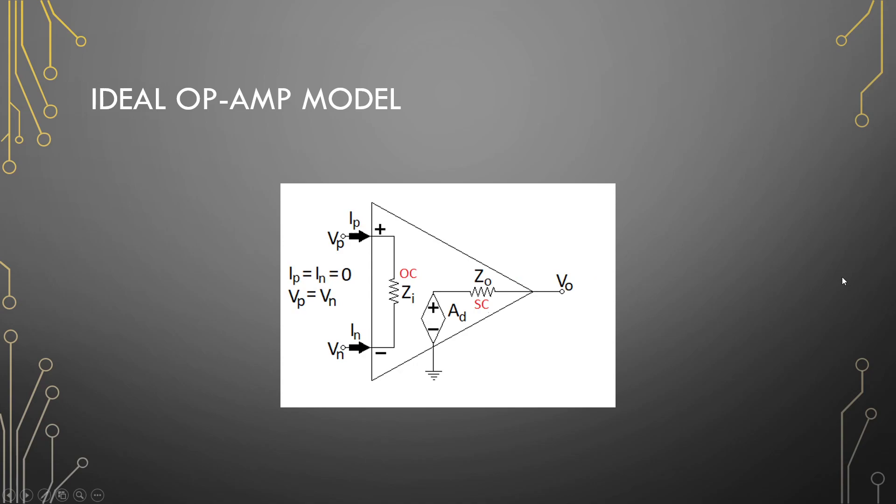So with our op-amp being ideal, Z-in is an open circuit, so no currents can be flowing into our op-amp. IP and IN we assume to be zero for ideal, and the op-amp tries to force VP and VN to be the same. So the assumption is that they are the same when we are dealing with ideal op-amp.